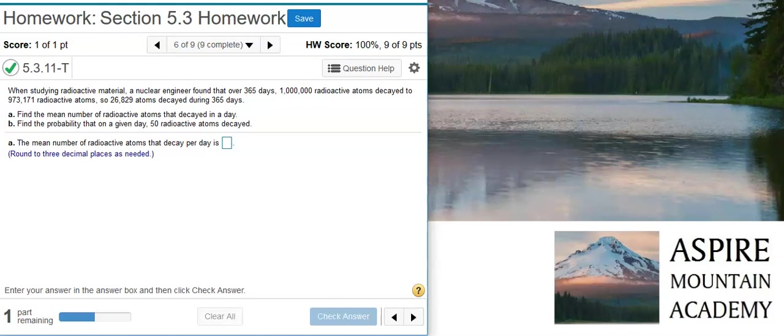Part A: Find the mean number of radioactive atoms that decayed in a day. Part B: Find the probability that on a given day 50 radioactive atoms decayed.